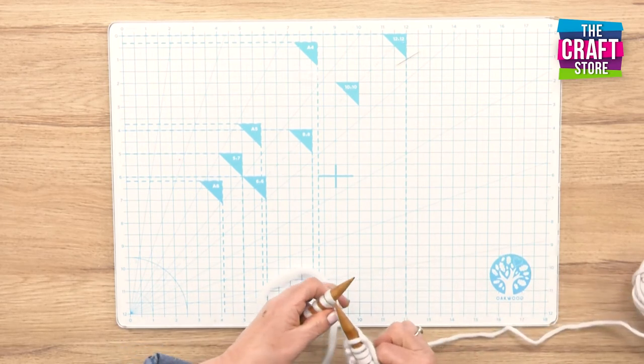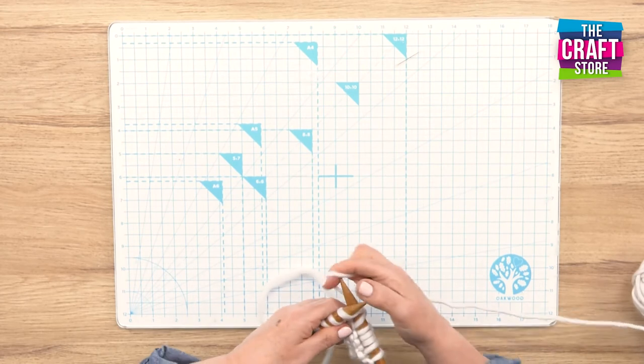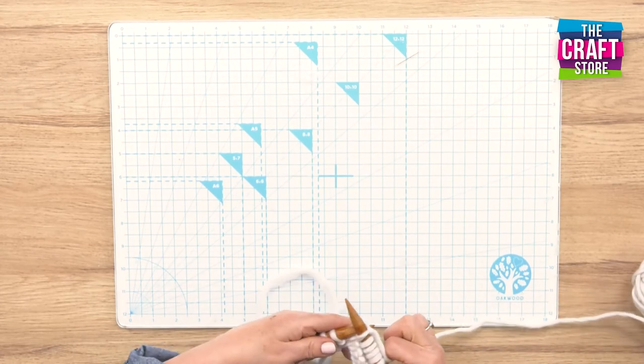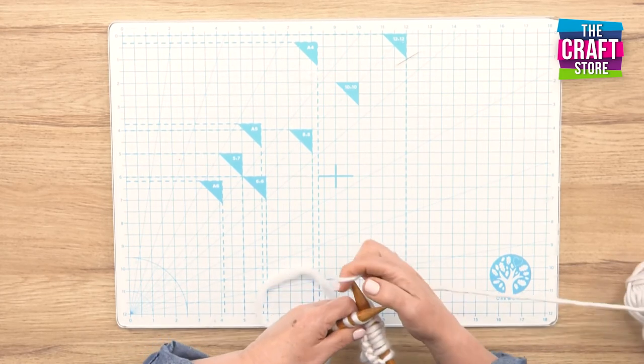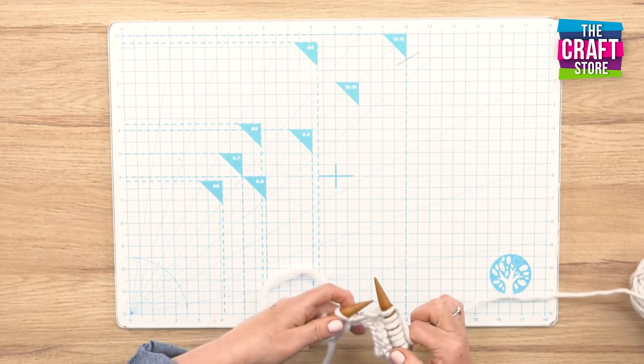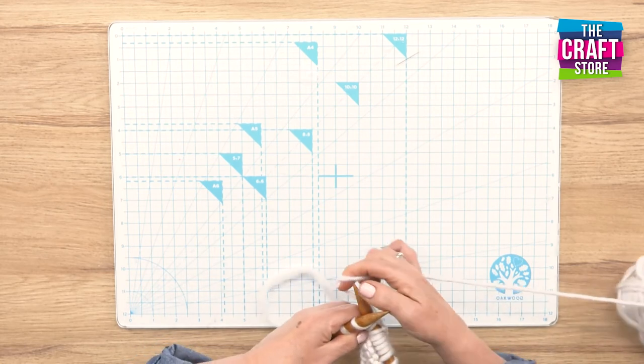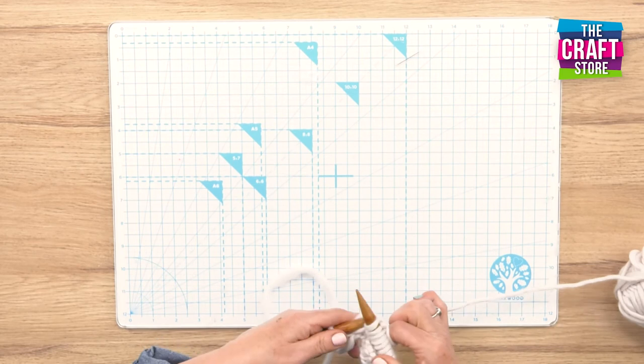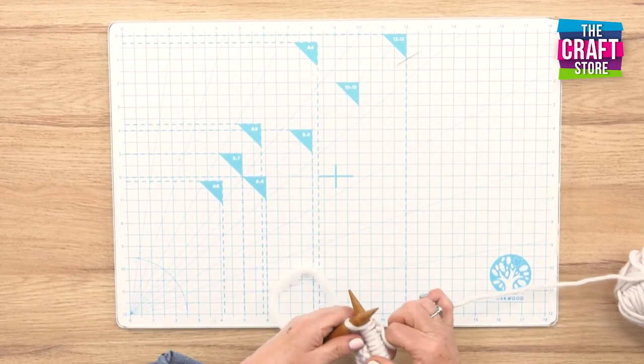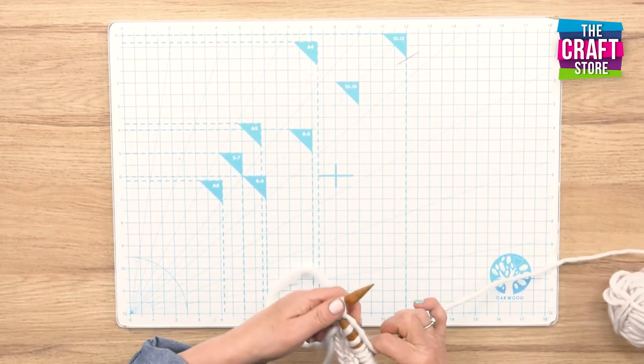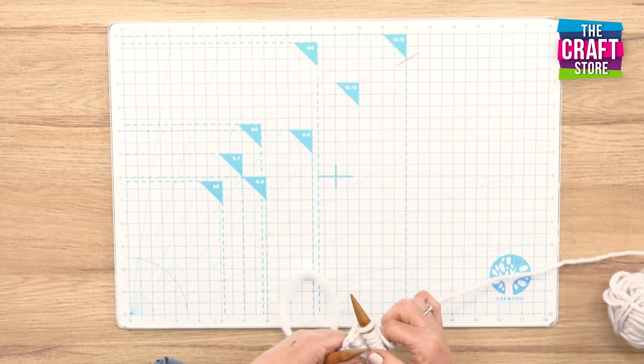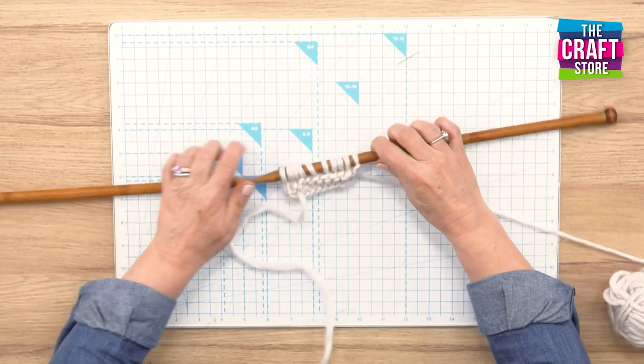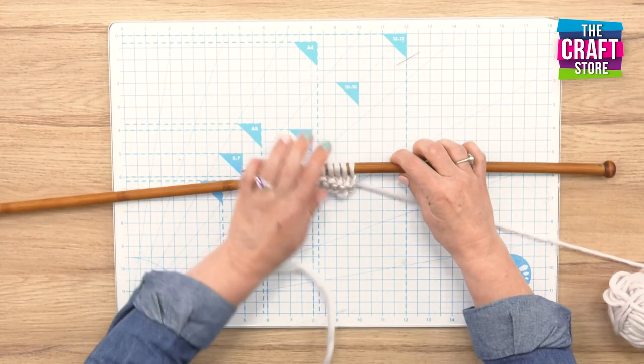It's just something I think helps. So we're going to go in, round, off. In, round, off. In, round, off. Last stitch and off. And there we have two rows of garter stitch.